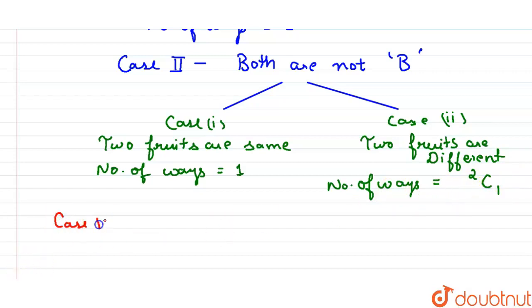Now Case 3: When out of two fruits, one is banana and one is some other fruit - it can be apple or orange. So the number of ways will be for one banana it will be 1, and for one fruit we have to select one fruit from these two fruits, either apple or orange, so 2C1. So now this will be equals to 2.